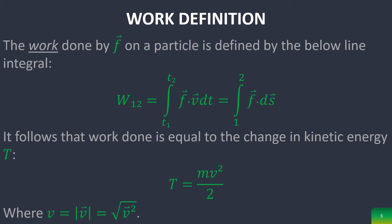Then the work done by a force F on a particle is defined as the below line integral, where basically the dot product of the force and the velocity can be simplified as a path, so the force that acts along a path. And it follows that the change in kinetic energy T is equal to work done.